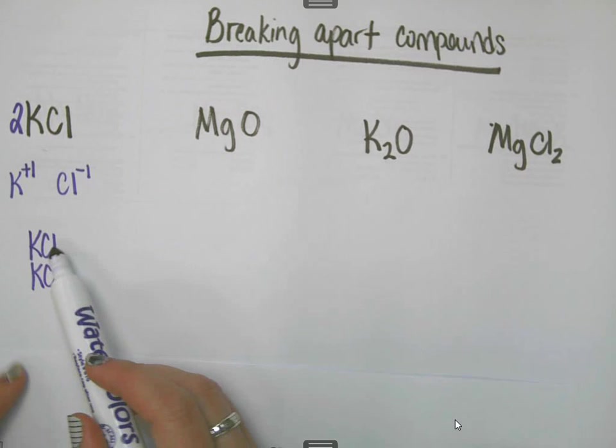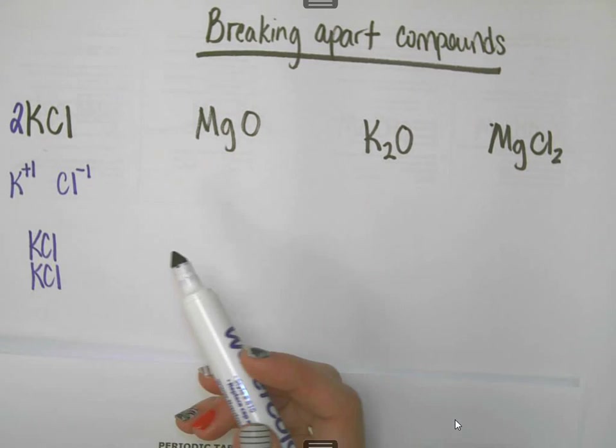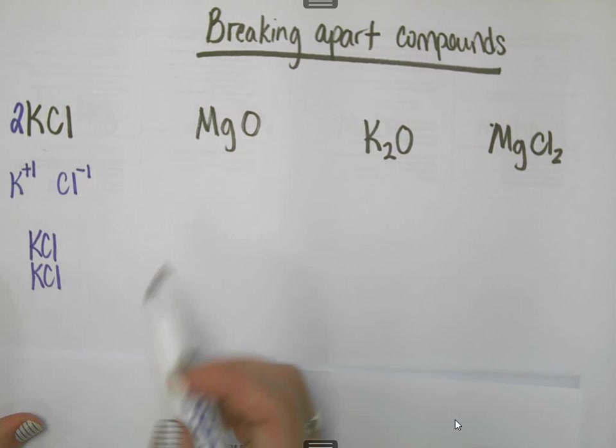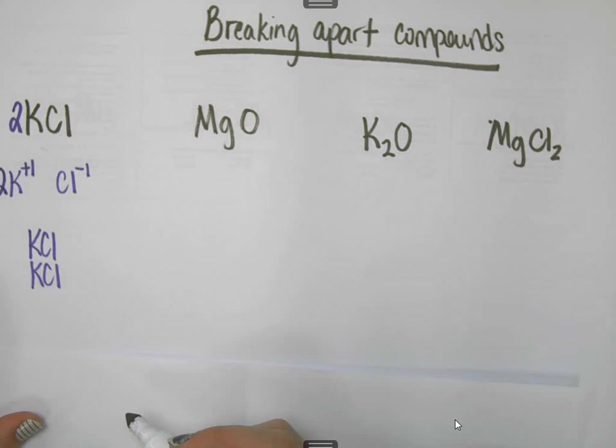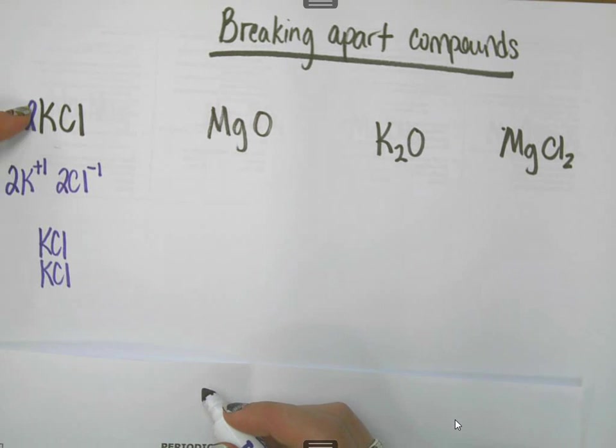You have basically KCl and another KCl. If each one of these breaks up into this, it would just simply double everything. So 2 KCl's would make 2 K plus 1's and it would make 2 Cl minus 1's. If this was a 3, then that would become 3 of each of those because each time they break up into 1 K plus 1 and 1 Cl minus 1.